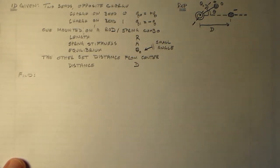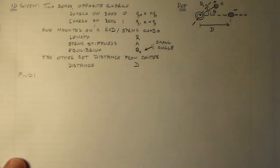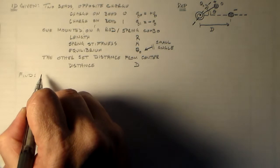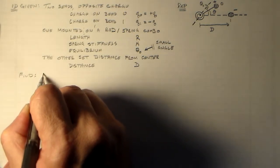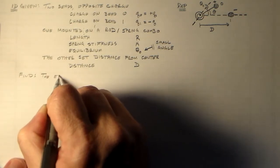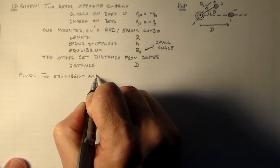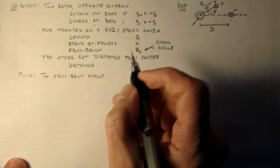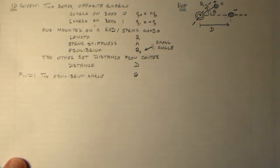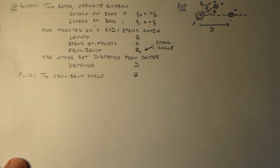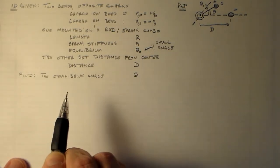So, now what we want to do is we want to find something, right? So what do we want to find? We want to find out what this angle actually is. So as we bring this closer, how does that angle change? We want to actually make some quantitative predictions. So we want the equilibrium angle theta.